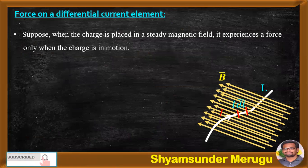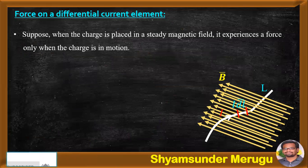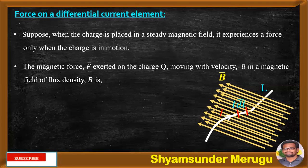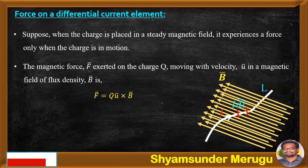Now, to derive the expression, let us consider that when the charge is placed in a steady magnetic field, it experiences a force only when the charge is in motion. The magnetic force F bar exerted on the charge Q, moving with velocity U bar, in a magnetic field of flux density B bar, is given by F bar equals Q U bar cross B bar.